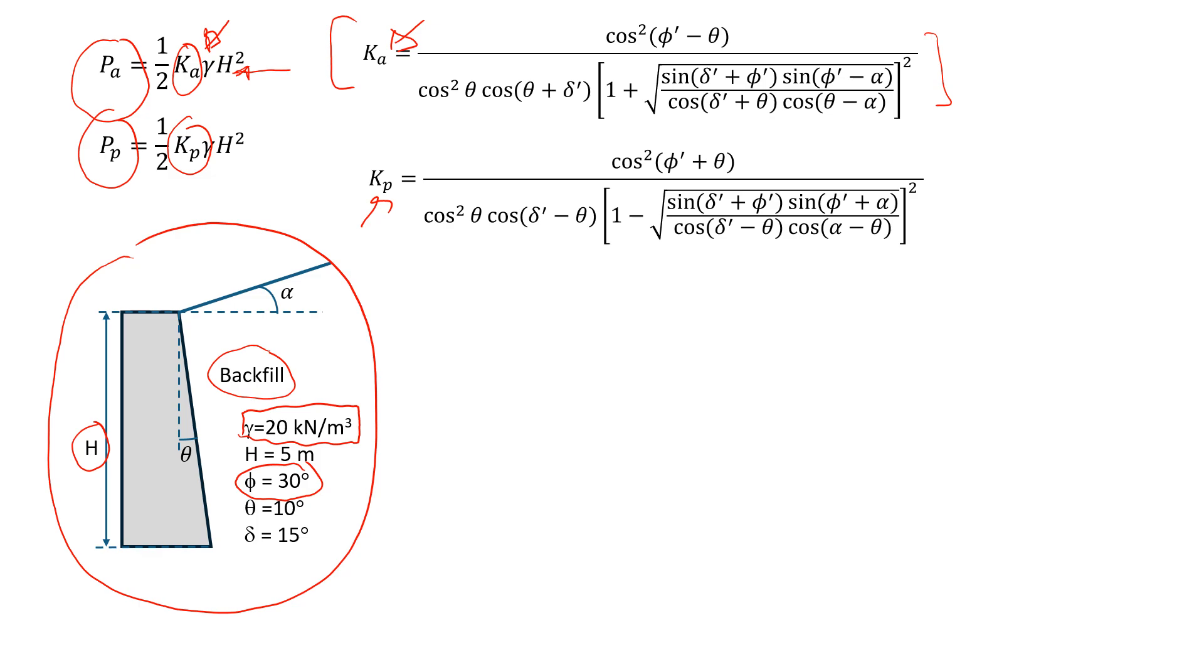Again, the formulas are very similar. There is only a few differences, so just pay attention when you use the formulas. Let's see what factors we use in these calculations. First of all, you will see that here we have a friction angle. So this is the friction angle of the soil, and it's given as 30 degrees.